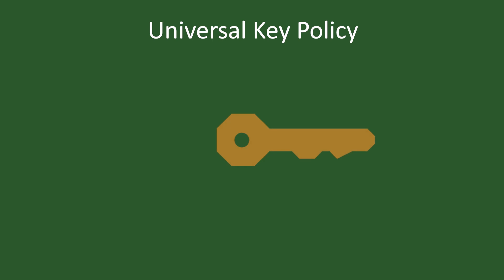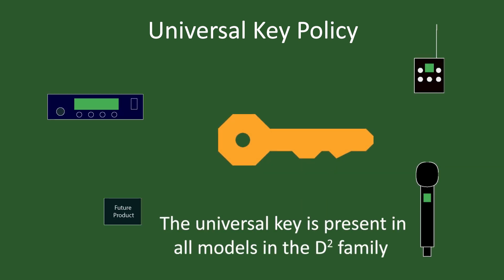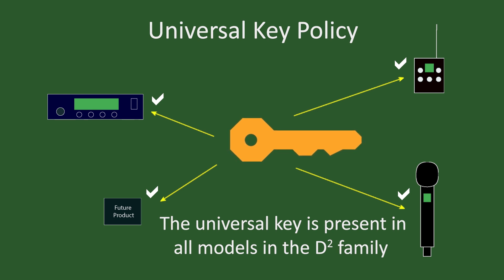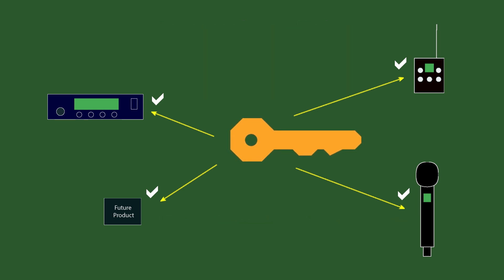Let's consider the three different key policy types available in the D-squared system. The universal key type provides the most convenient option and is the default setting on D-squared transmitters and receivers. A unique key does not have to be generated for each situation — simply set the transmitters and receiver to universal key type and the encryption is in place. This prevents someone with a scanner and digital demodulator from decoding the audio, but is not as secure as creating a unique key.